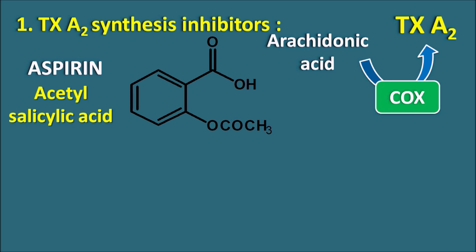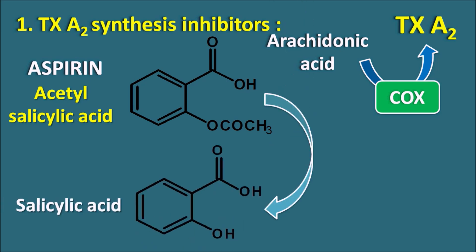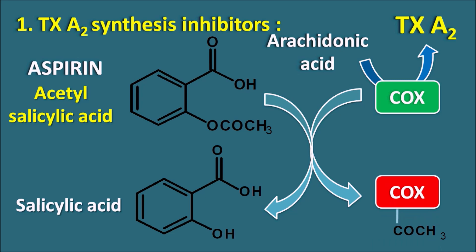Aspirin inhibits the activity of the COX enzyme by binding to it in an irreversible way. This acetylsalicylic acid has a leaving group — the acetyl group — so aspirin is converted to salicylic acid, where the acetyl group is transferred to the COX enzyme, producing an acetylated COX enzyme. This acetylated COX enzyme has loss of activity, thereby inhibiting the synthesis of thromboxane A2. In this way, aspirin inhibits thromboxane A2 synthesis and prevents platelet aggregation.